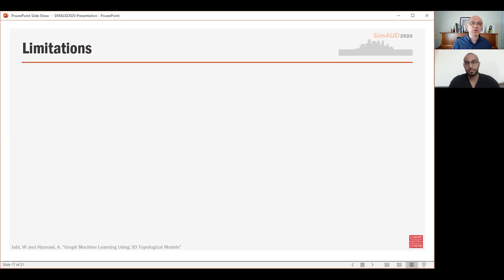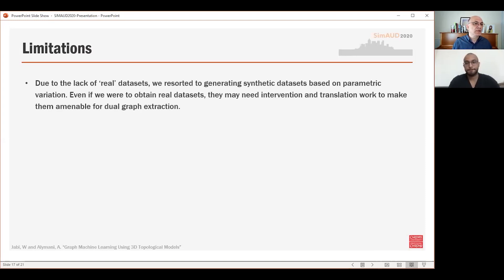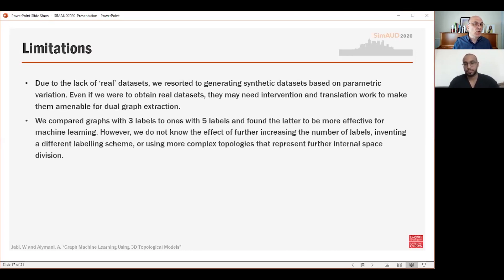Thanks, Abdul. I will now quickly cover the limitations and conclusions of this research. First, due to the lack of real datasets, we resorted to generating synthetic datasets based on parametric variation. Even if we were to obtain real datasets, they may need intervention and translation work to make them amenable for dual graph extraction. We also compared the graphs with three labels to the ones with five labels and found that the latter is more effective, but we don't know the effect of further increasing the number of labels, for example for interior subdivisions, or inventing a completely different labeling scheme using more complex topologies.